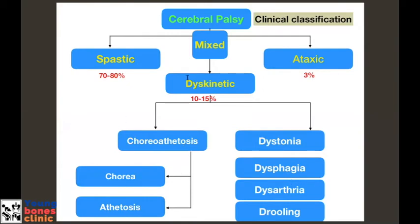As orthopedic surgeons and therapists, we are mostly involved in treating the spastic and the dystonic types. The choreoathetoid, dysphagia, and ataxic types usually need additional neurological intervention from pediatric neurologists because they have greater brain damage. We'll come back to that later.